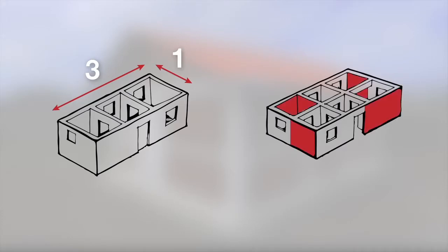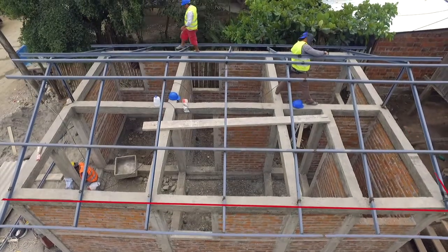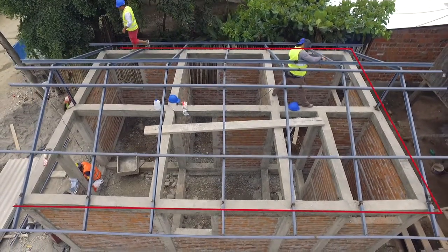The building length should not exceed three times its width. In each facade, there should be at least one solid wall panel without openings, which is called a shear wall. The building plan should be a regular shape, ideally rectangular.